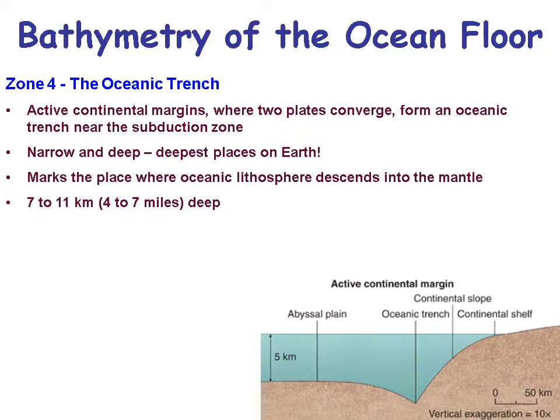Scripture mentions springs in the deep — God put those oceanic springs there to bring material out of the earth into the oceans, as discussed in Psalm 104. Zone four is the oceanic trench, where two plates converge. When they push together, one plate is subducted down — an oceanic plate subducted under a continental plate, or beneath another oceanic plate. The crust is pulled down, making these the deepest places on earth — up to seven miles deep in some trenches.